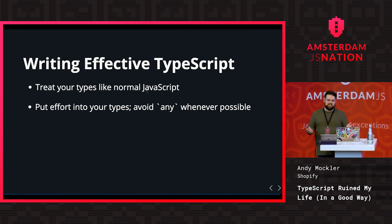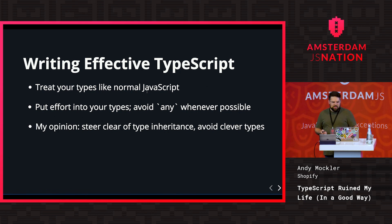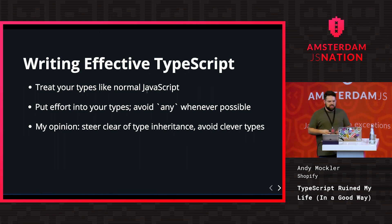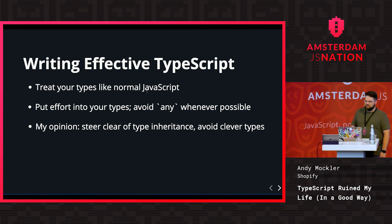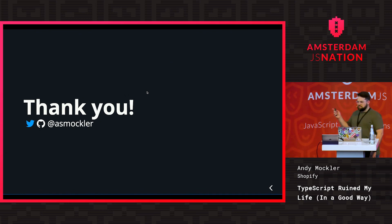You can express pretty much anything with the type system — even duck typing. But I think steering clear of type inheritance is a good idea: try to keep your types simple and never have long inheritance chains. Also avoid clever types. You can express pretty much anything, but sometimes those types are too clever and make them hard to use. Thank you so much. You can find me at this handle pretty much everywhere.